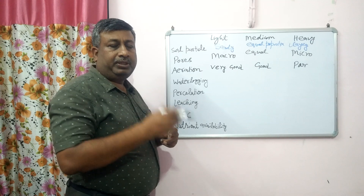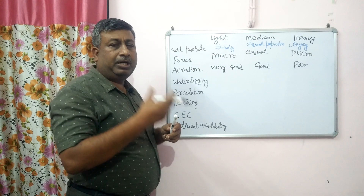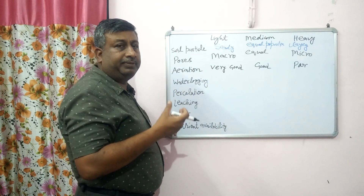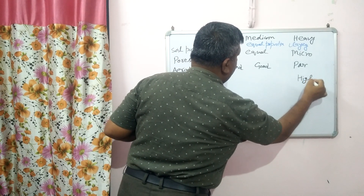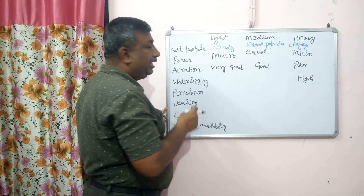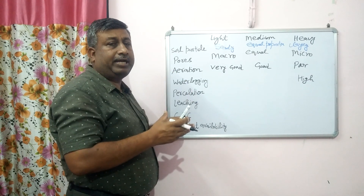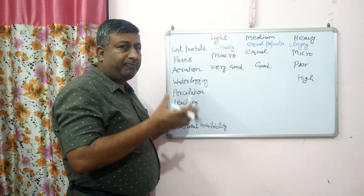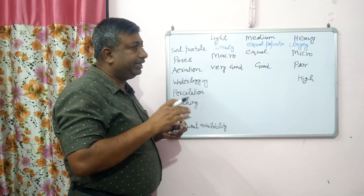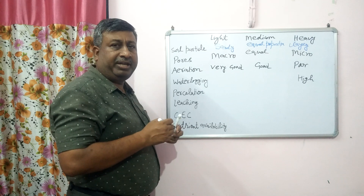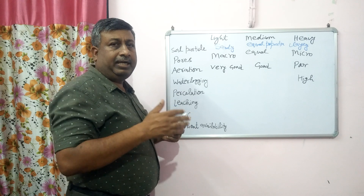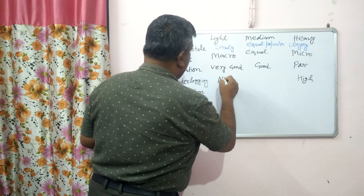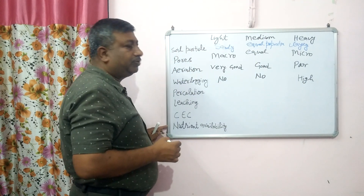In heavy soil the root growth is poor, while in sandy soil underground biomass production is better. Regarding water logging: since micro pores are responsible for water retention, water logging is high in heavy textured clay soil. In light textured soil, macro pores cannot retain water against gravitational force, so there is good internal drainage and no water logging. After irrigation or rainfall, water percolates very easily in sandy soil — no water logging occurs.